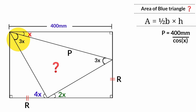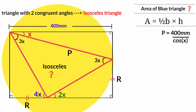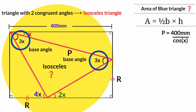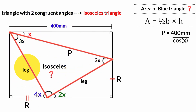What type of triangle has two congruent angles? It's an isosceles triangle. So this triangle here is an isosceles triangle. In an isosceles triangle we have the two base angles, the vertex angle, the base facing the vertex angle, and the two equal legs. Therefore, this side and this side are equal in length — let's label them Q.